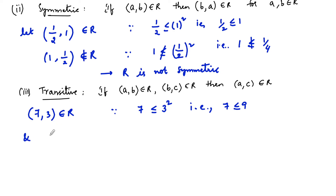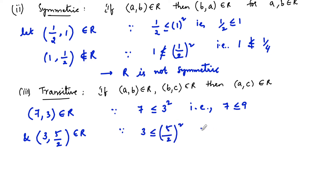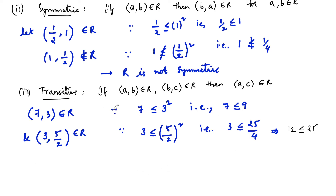And (3, 5/2) belongs to the relation R, since 3 ≤ (5/2)² = 25/4. By cross multiplication, 3×4 = 12 is less than or equal to 25, which is satisfying. Now we need to check whether (7, 5/2) belongs to R to determine if the relation is transitive.